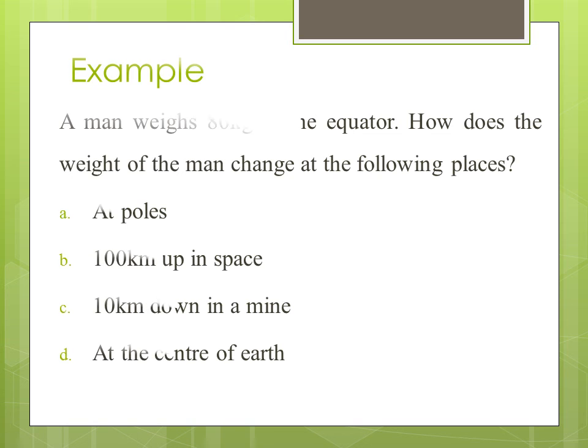Let us consider an example related to variation of acceleration due to gravity. A man weighs 80 kg at the equator. How does the weight of the man change at the following places? A. At poles B. 100 km up in space C. 10 km down in a mine D. At the center of earth.